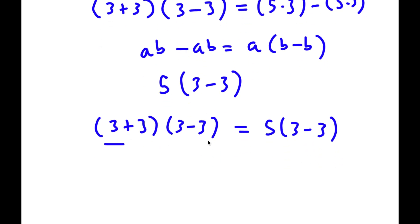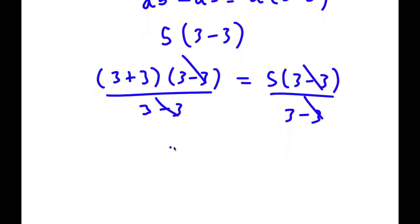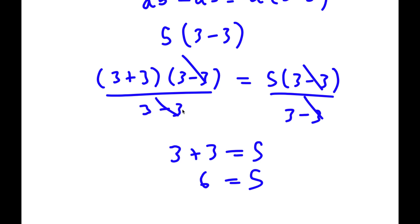Now if I divide both sides by (three minus three), these cancel out and I get three plus three equals five, or six equals five — which is obviously wrong. The mistake is dividing by three minus three, because three minus three is zero, so this is technically dividing by zero, which has no defined value. That's where this proof went wrong.